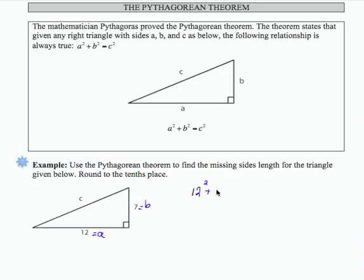So 12 squared plus 7 squared equals c squared. It's very important that you keep the relationship in the order that it's presented. The c can only ever be by itself. It can't be added here when you set up your initial equation.